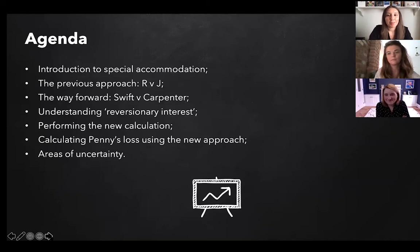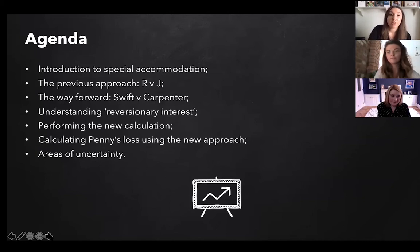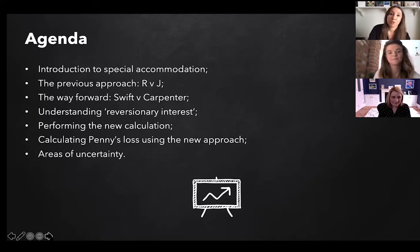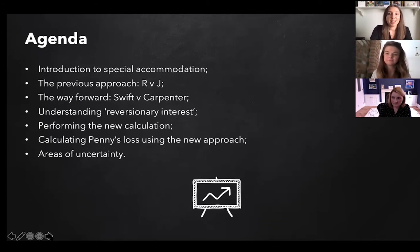Then we'll look at Roberts v Johnston, which was the previous way special accommodation claims were valued, and then we'll talk about how things are now following the Swift and Carpenter judgment which tells us how to calculate going forward. That's going to include looking at what reversionary interest is, how to perform the new calculation, and then we'll demonstrate the new calculation using Penny's specific circumstances. And then last but not least, we'll give you a few red flag areas that weren't dealt with squarely in Swift and Carpenter and which you need to be aware of depending on the facts of your particular case.